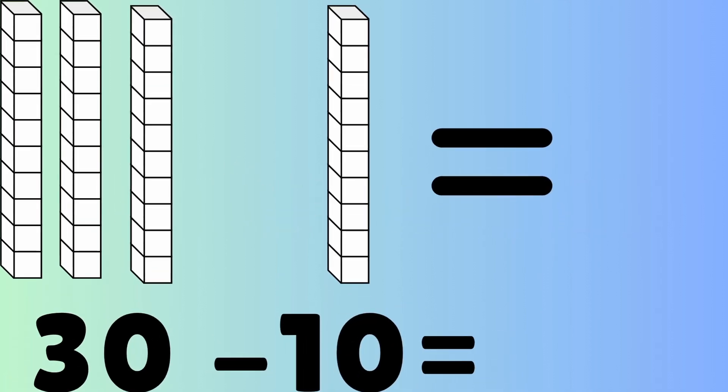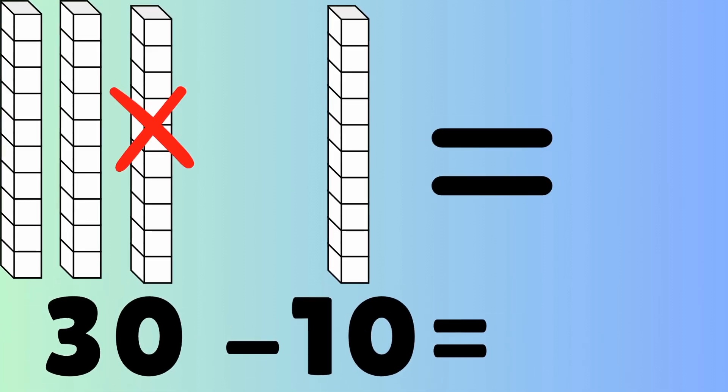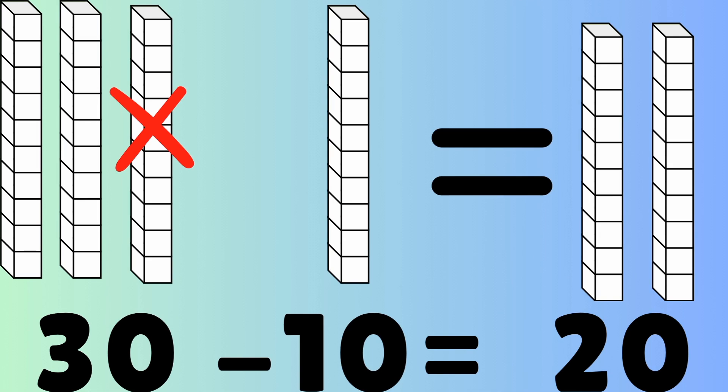We're going to do some subtraction. Thirty minus ten. There's thirty on the left and ten on the right. So if you subtract ten from that, we marked off one block of ten. How many does that leave? Twenty. Because you count the blocks of ten — one, two. So that's twenty.